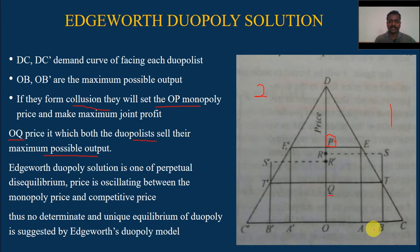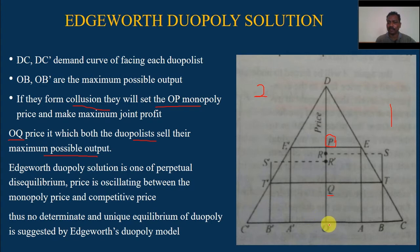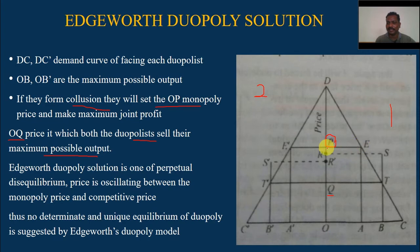This would yield greater profit to Producer 1 than he is making at the current monopoly price. In the diagram, if the producer lowers the price from OP to OR, he is able to sell his entire maximum output OB at price OR. The profit OBSR is greater than the profit OAEP earned at the monopoly price.